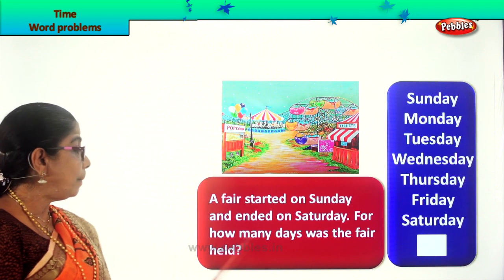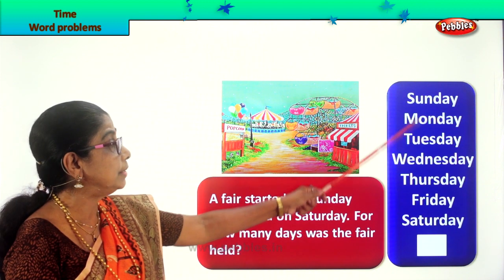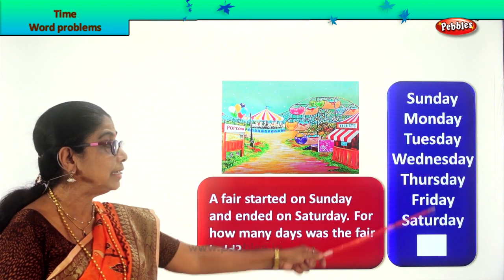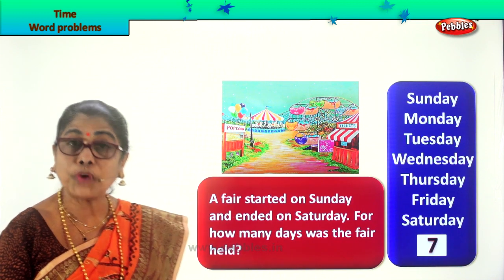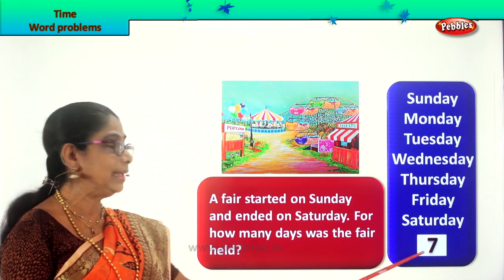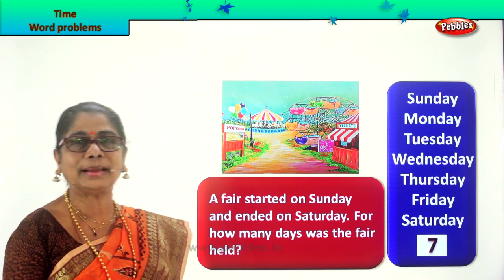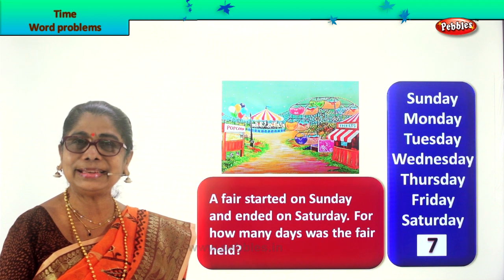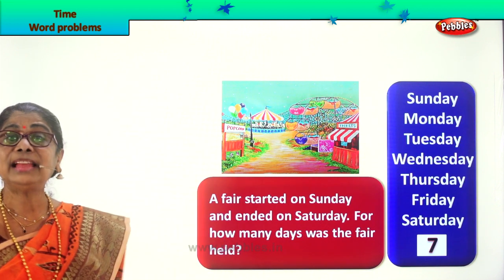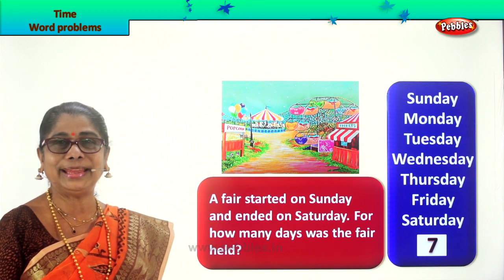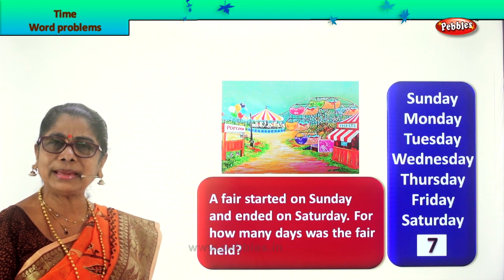For how many days was the fair held? It was held for one, two, three, four, five, six, seven days! The fair was held for seven days, and you are very happy going there and back again. For how many days was the fair held? The fair was held for seven long days. Are you happy?